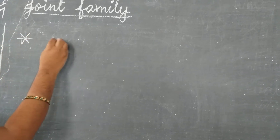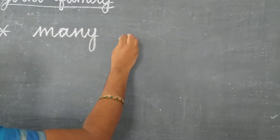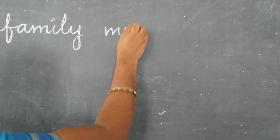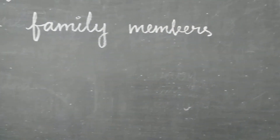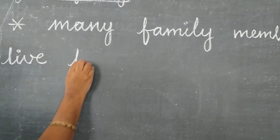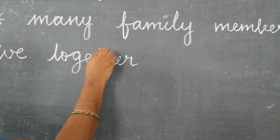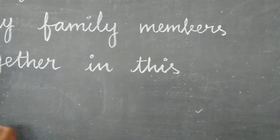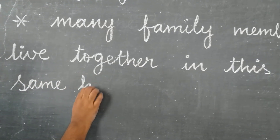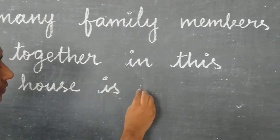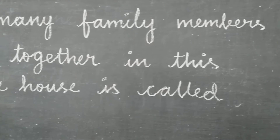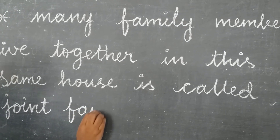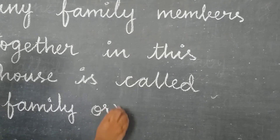Many family members live together in the same house. It is called joint family, or undivided family.